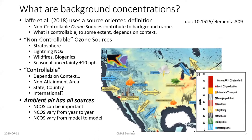As motivation and background for this talk, I'm going to talk about what background concentrations are. In 2018, I got to be part of collaborative work that looked at background ozone sources — that's the Jaffe et al. 2018 paper. In that paper, we talked about background concentrations as non-controllable ozone sources, or INCOs. Those individual sources contribute to background ozone, which is essentially the ozone that is not going to be controllable.